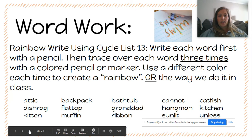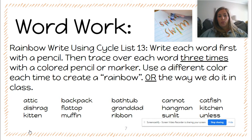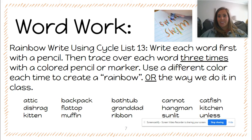Word work today is going to be rainbow write. So you're going to use the cycle 13 list this week, and you're going to write each word first with a pencil, then trace over each word three times with a colored pencil or marker, or even crayons. Use a different color each time to create a rainbow. These are the words down here, and I also have an example of what rainbow write looks like — and you guys have done this a lot this year.